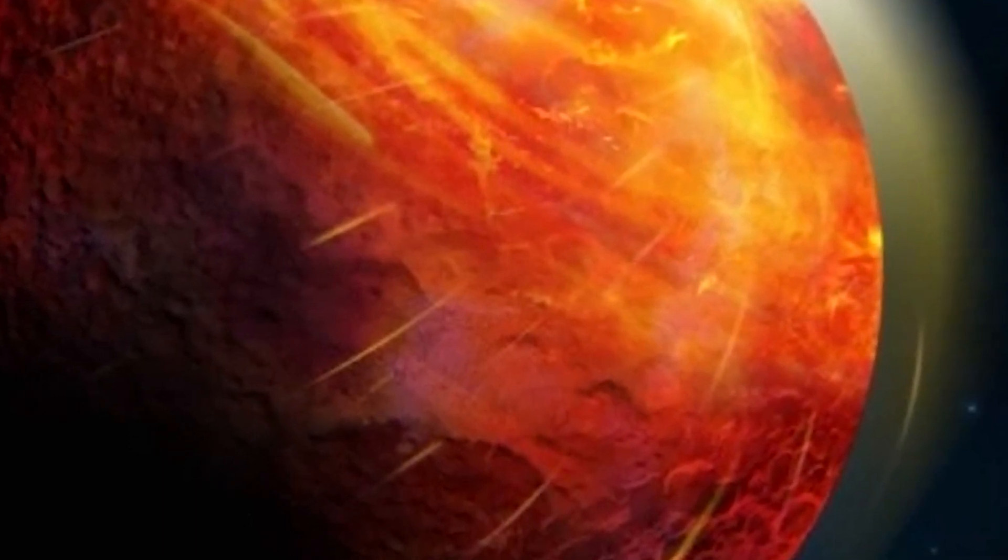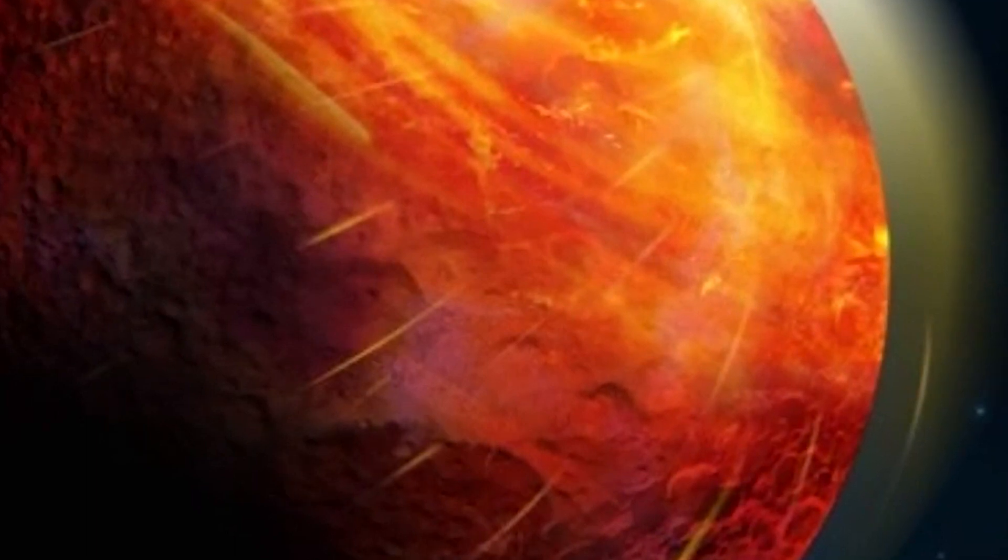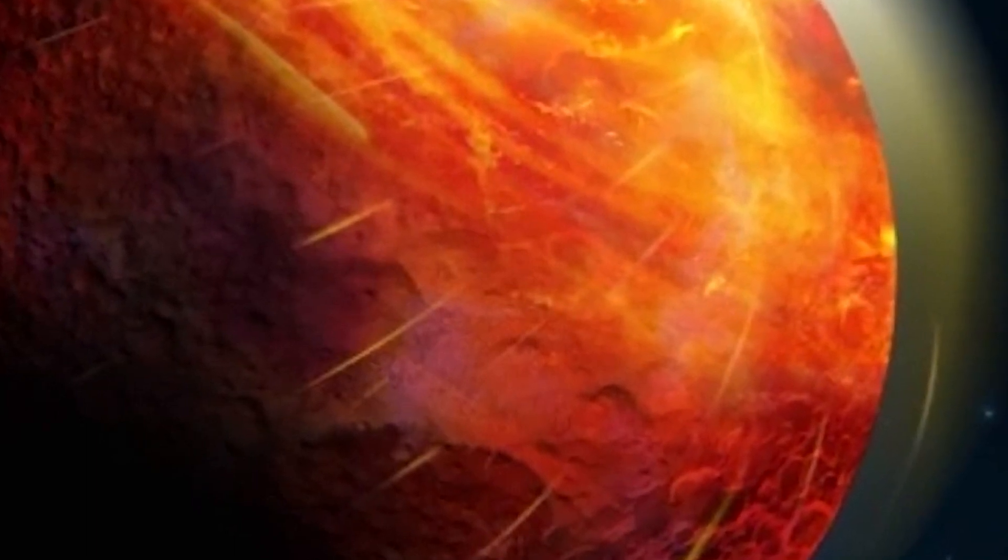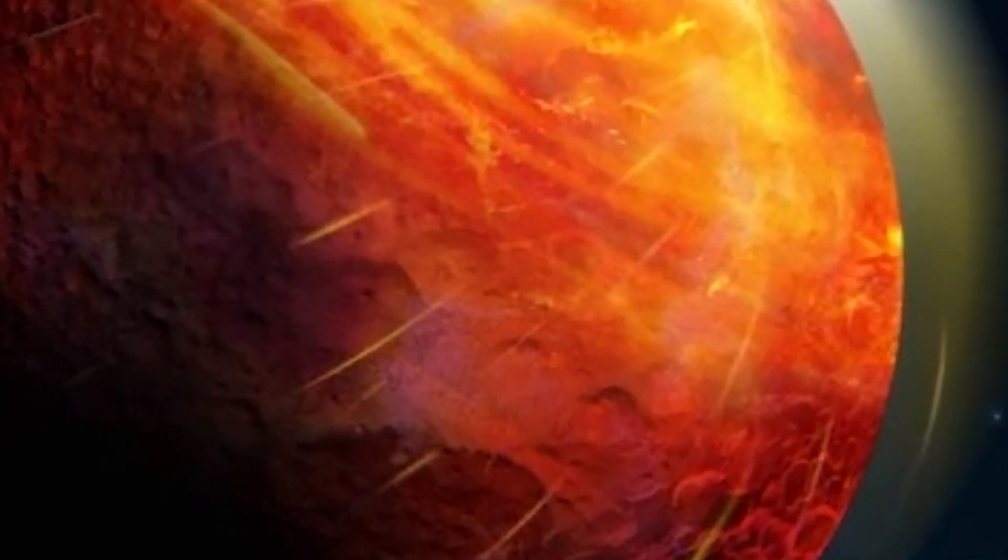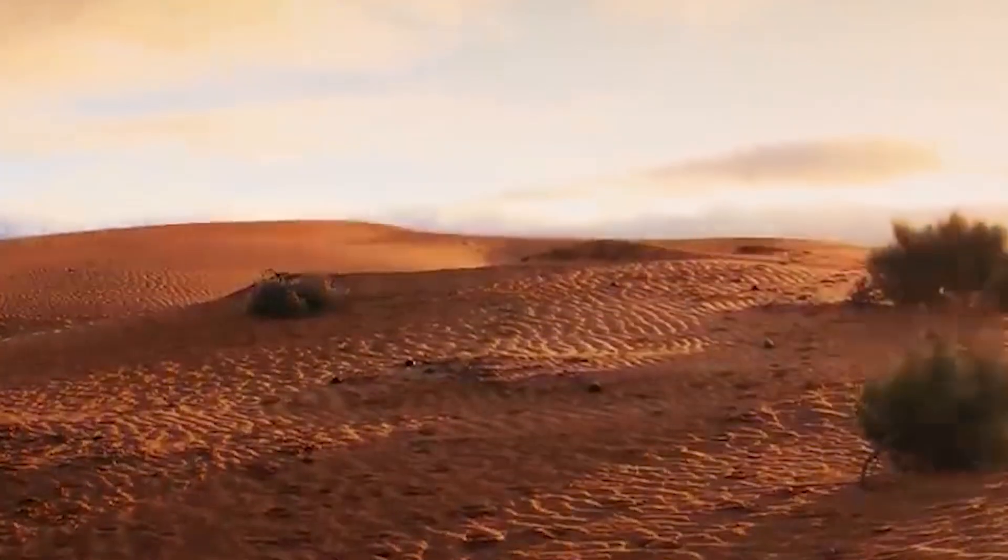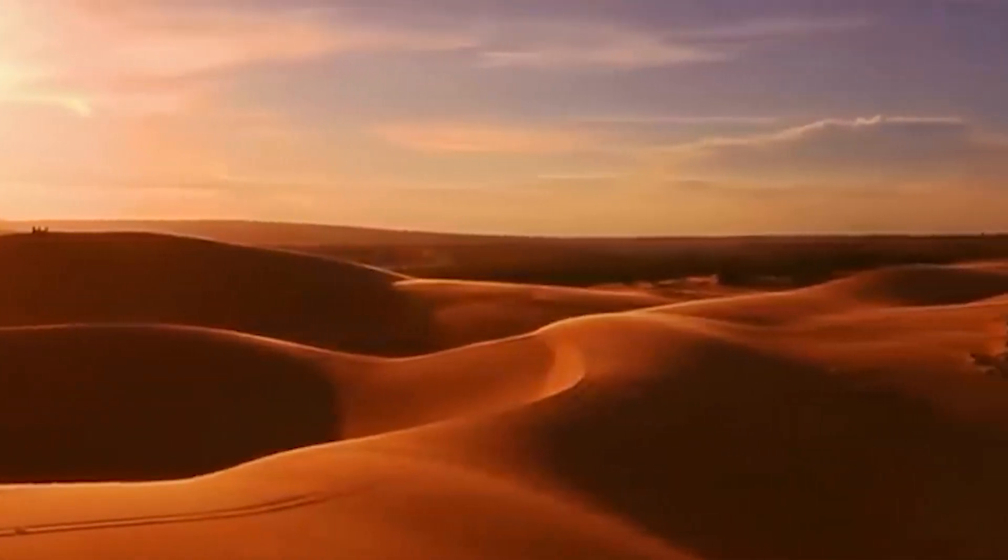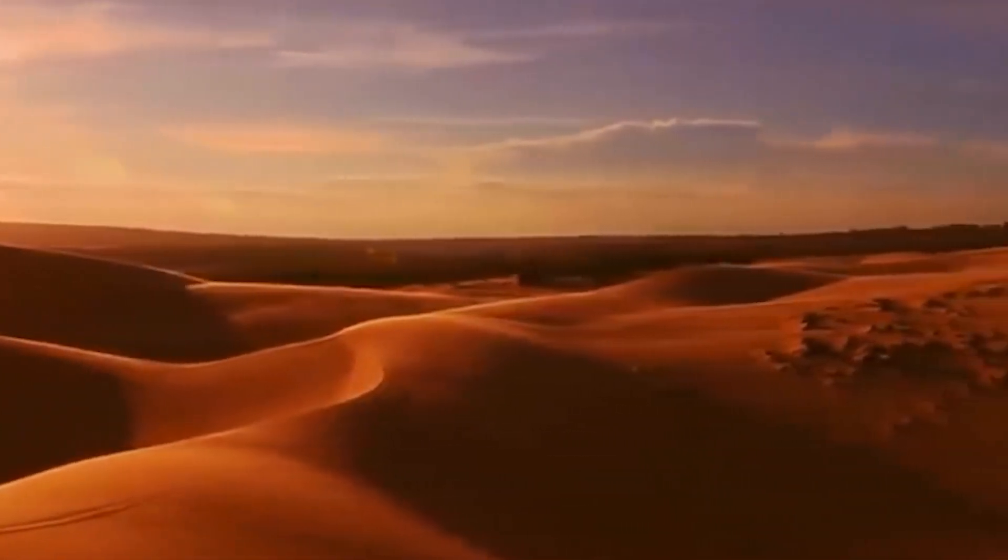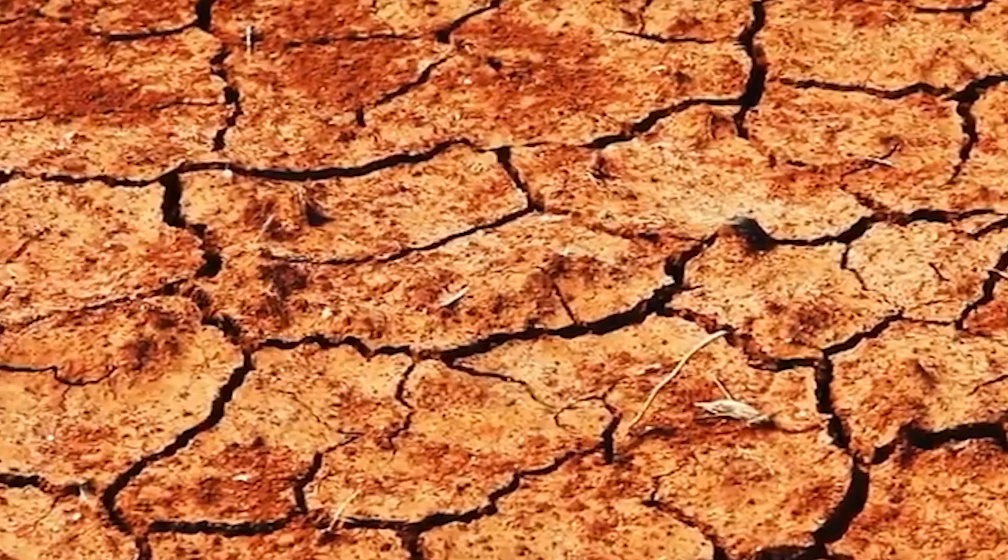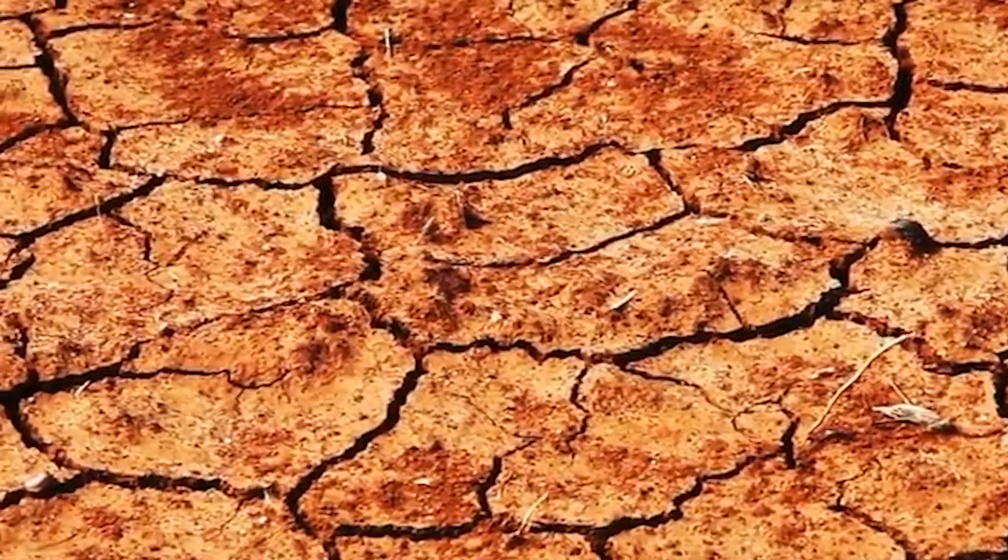It has an orbit that is incredibly close to its star, which is only a little more diminutive than our Sun. This lava planet completes one revolution in approximately six or seven hours, and as it hurtles through space, it comes dangerously close to brushing the surface of its parent star.